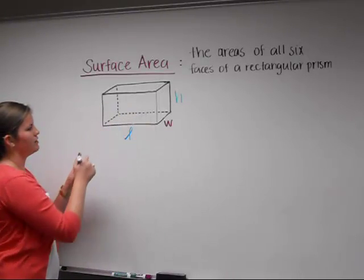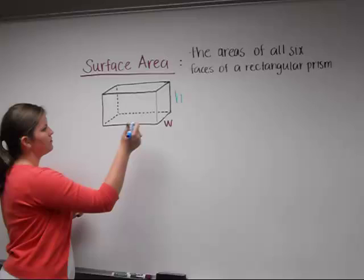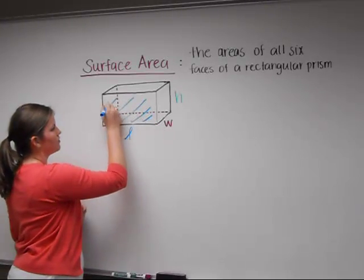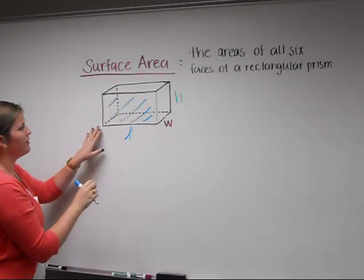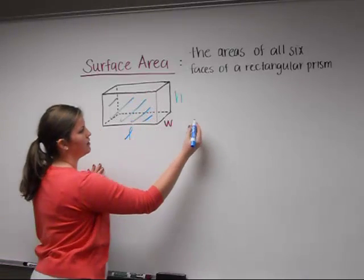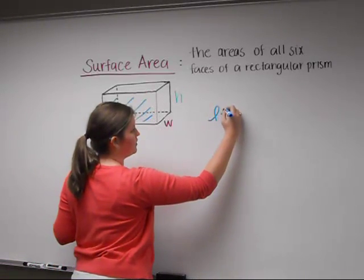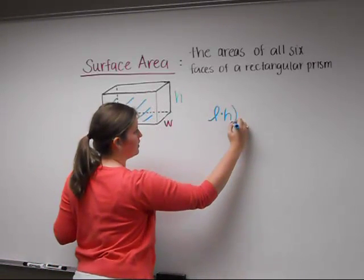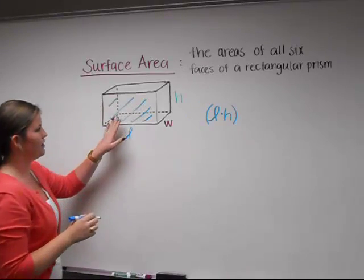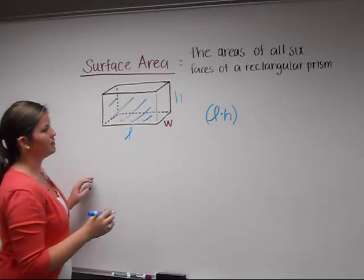To start, we're going to find this front face. To find the area, we want to do the length times the height. And since each face has a twin, we can multiply this by two.